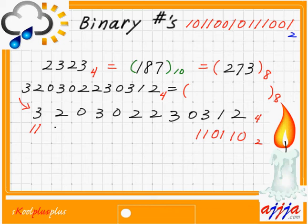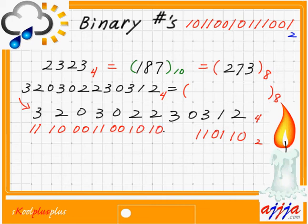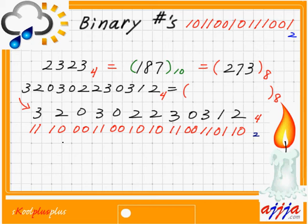Digit 0 means 0, 0 (both dead). Digit 3 means 1, 1 (both alive). Digit 0 means 0, 0. Digit 1 means 1, 0. Digit 2 means 0, 1. So the full binary representation is: 1, 1, 0, 0, 1, 0, 1, 1, 1, 0, 0, 0, 1, 1, 0. Beautiful!